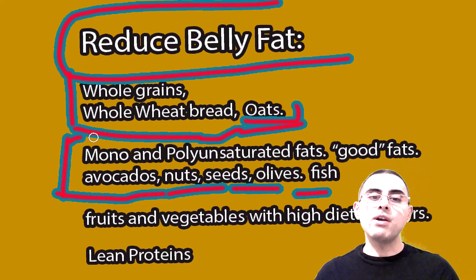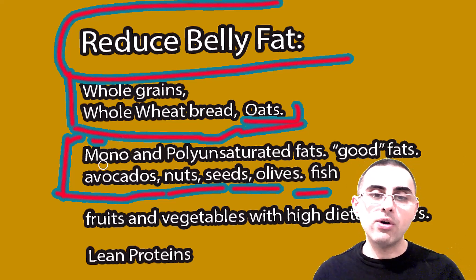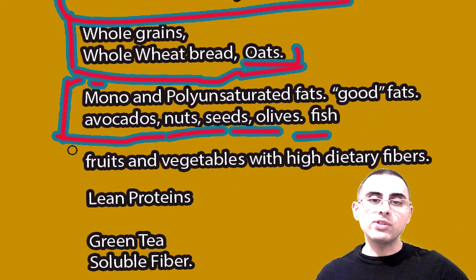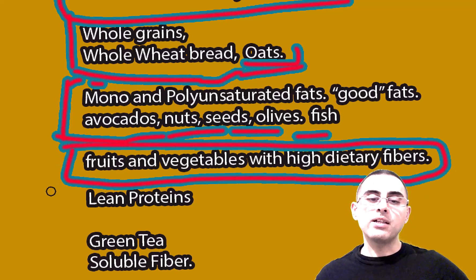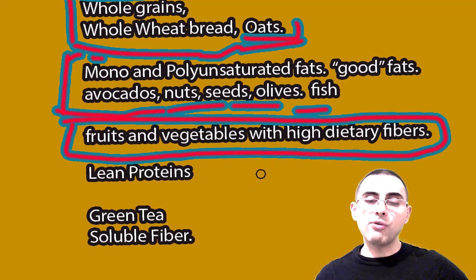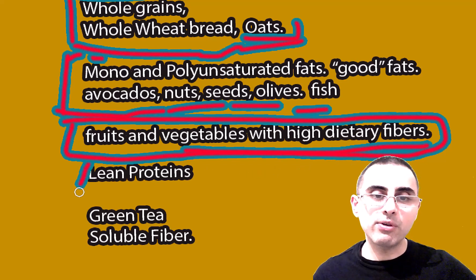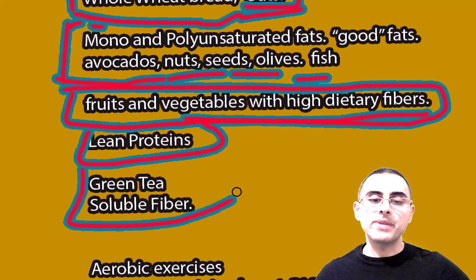Mono and polyunsaturated fats — the so-called good fats — are also important. These include avocados, nuts, seeds, olives, and fish. Good fats decrease the risk of visceral fat and reduce cardiovascular mortality. Fruits and vegetables with high dietary fiber are strongly recommended — foods like apples, pears, plums, cherries, and strawberries contain significant dietary fiber and have a positive effect on visceral fat.